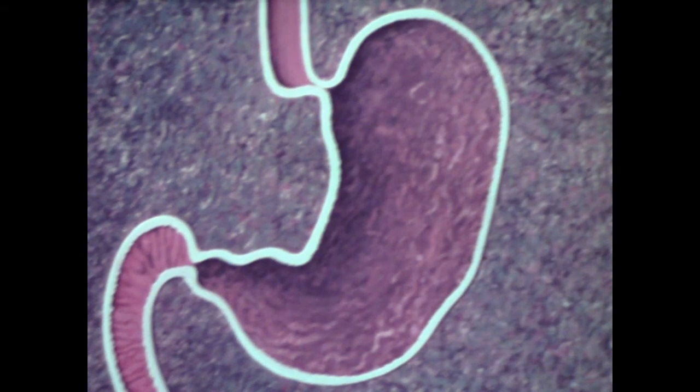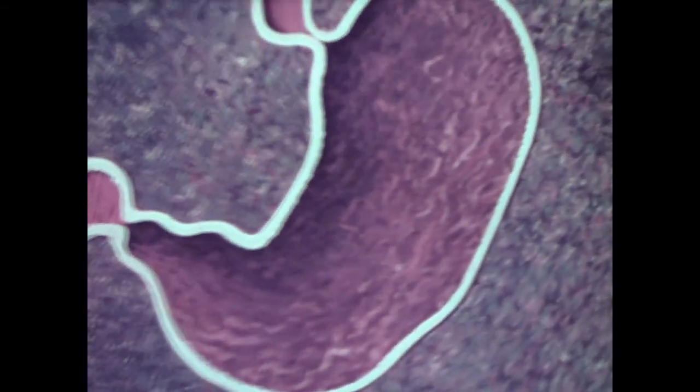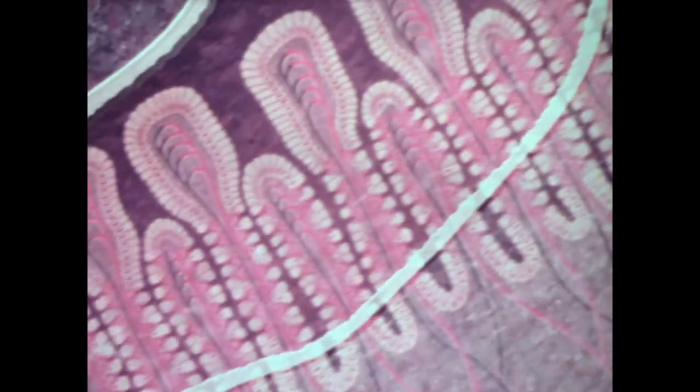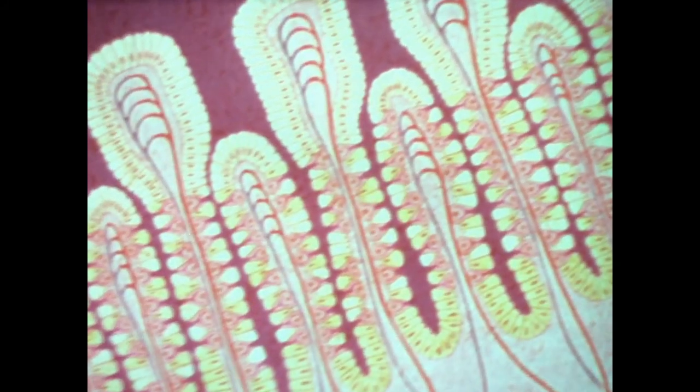As food passes from the esophagus into the stomach, a major process of digestion begins. The upper portion of the stomach serves to hold food, while in the lower region, gastric digestion takes place. The inner lining, or mucosa, of the stomach is made up of numerous minute glands. These glands secrete a fluid called gastric juice.